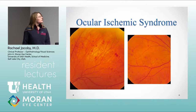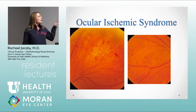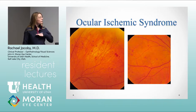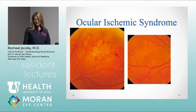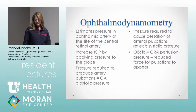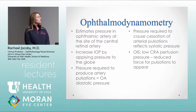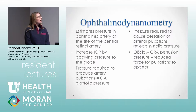The retinal findings are mid-peripheral blot hemorrhages — these are deeper blot hemorrhages as opposed to the flame hemorrhages you would see in a vein occlusion. In clinic when you're not sure if it's diabetic, a vein occlusion, or ocular ischemic syndrome, one thing you could do pretty easily is ophthalmodynamometry.